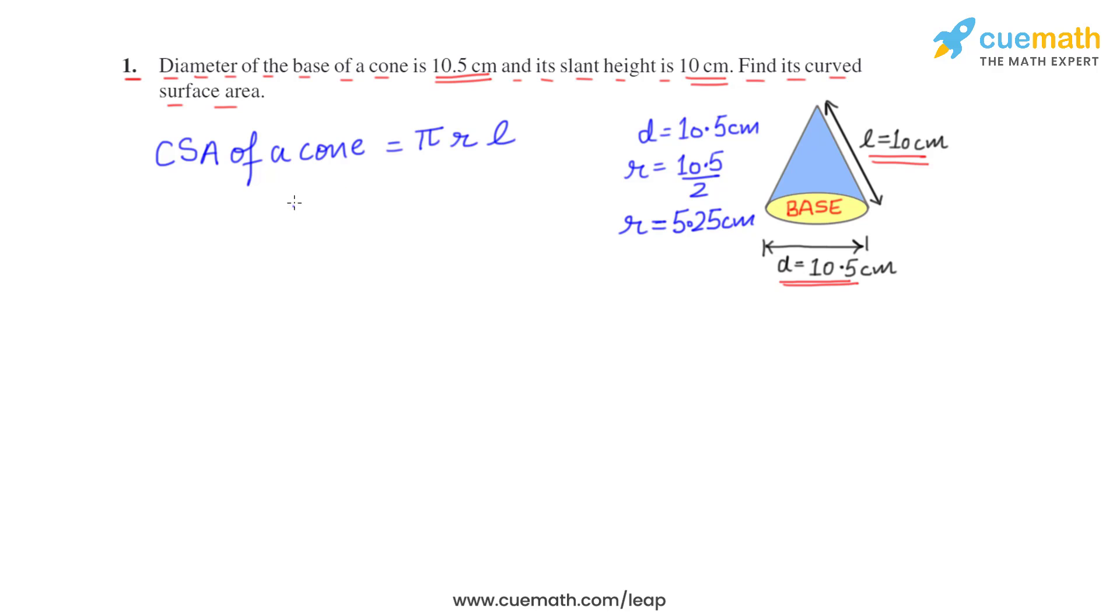The curved surface area—and π we have to take as 22 by 7—so 22 by 7 into radius is 5.25 into slant height is 10. So this comes out to be 165 square centimeters.